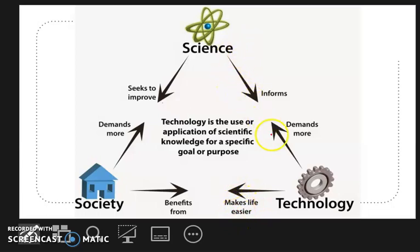Society benefits from technology, which makes life easier. In order to build technology, science is needed. Technology is used by society to make life easier. Technology is the use or application of scientific knowledge for a specific goal or purpose.